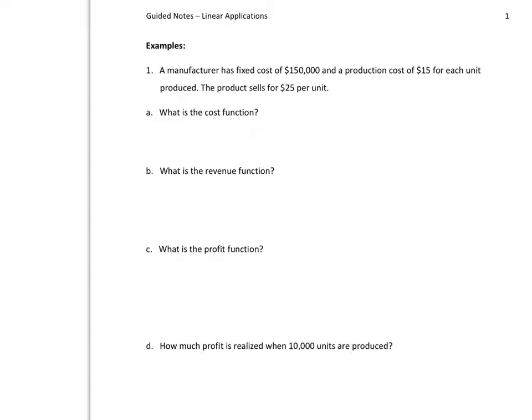A manufacturer has fixed costs of $150,000, production costs of $15 for each unit, product sales for $25 per unit.